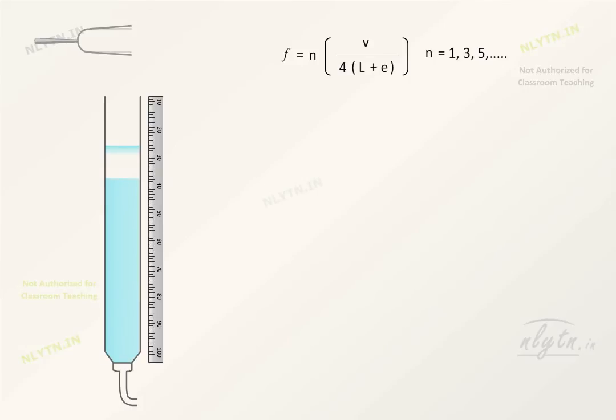The length for which the loudness is maximum is the length for which the first harmonic is set. That is, it corresponds to the fundamental mode.